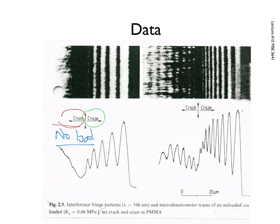Then we go to a situation in which we do have load — we've loaded it back up again. What happens is these crazes become much finer because we started to stretch them out. Especially at the interface with the cracked area, they become very fine, and as we move away from it things change. The level or intensity of fibril stretching is proportional to the spacing between these patterns of light and dark. With this as a tool, we can ask what happens if pressure, humidity, or acetone changes, and watch what those effects have on crazing.